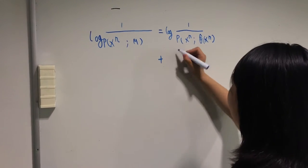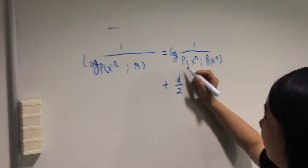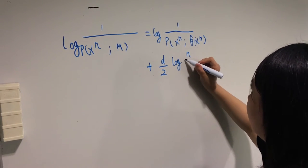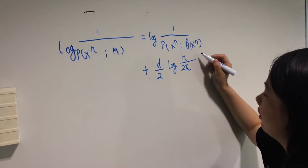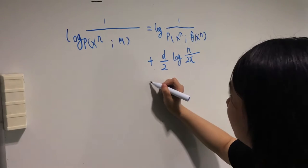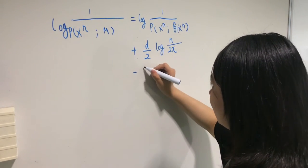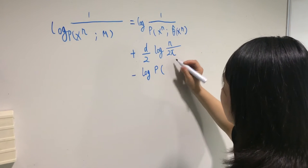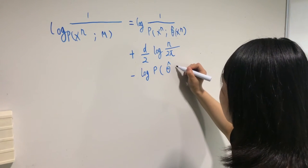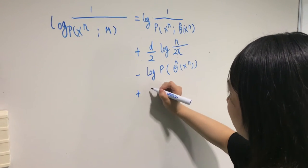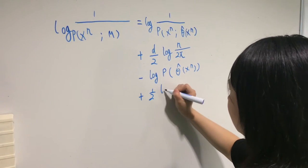A term depends on number of parameters and sample size. The third term depends on the prior. The fourth term depends on the Fisher information matrix.